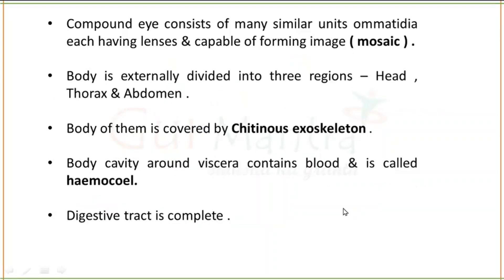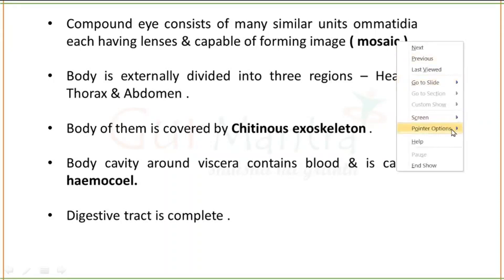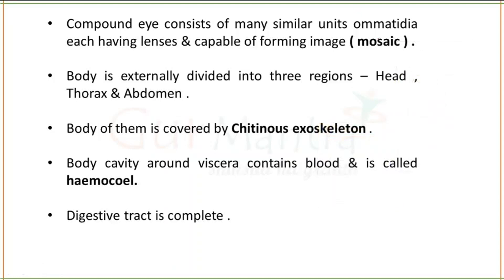Compound eyes are present in some animals of this group. Compound eyes are made of small units called ommatidia. Each ommatidium has a lens, and together they form an image known as mosaic vision. An example of an organism with compound eyes is the cockroach.